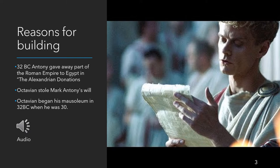Octavian had a large building program set around something called the Campus Marcius — the old parade ground in ancient Rome. The idea was that he was building buildings of peace in an area that had once been used for war. The Campus Marcius was where soldiers would once march around, and now he was associating it with the Ara Pacis — the altar of peace — and the Mausoleum of Augustus, which are roughly in the same place.